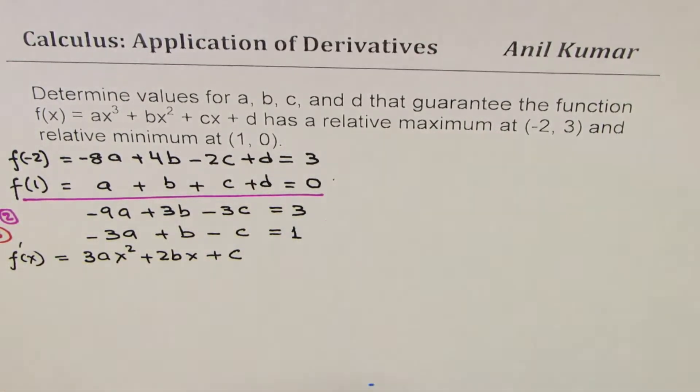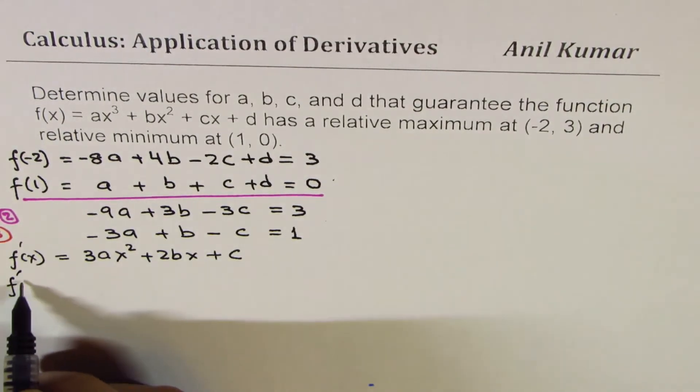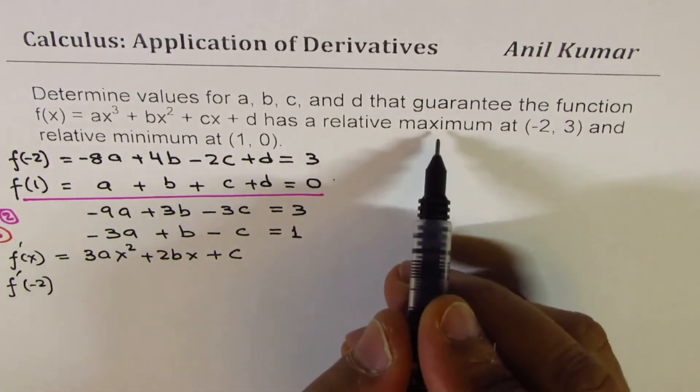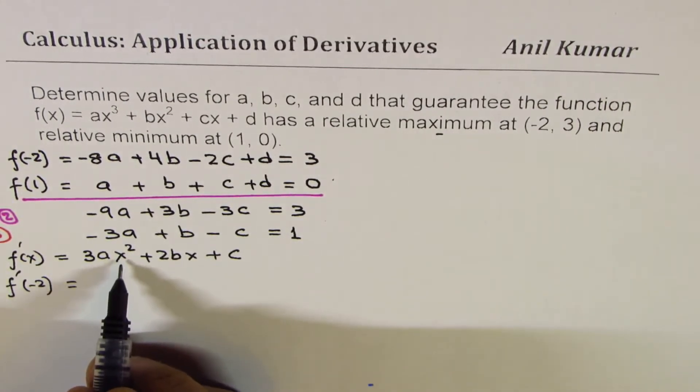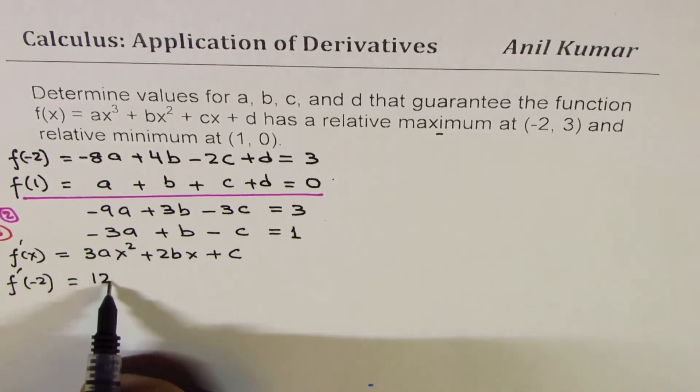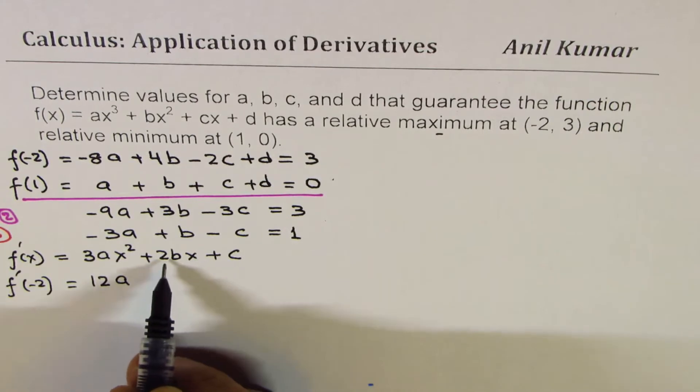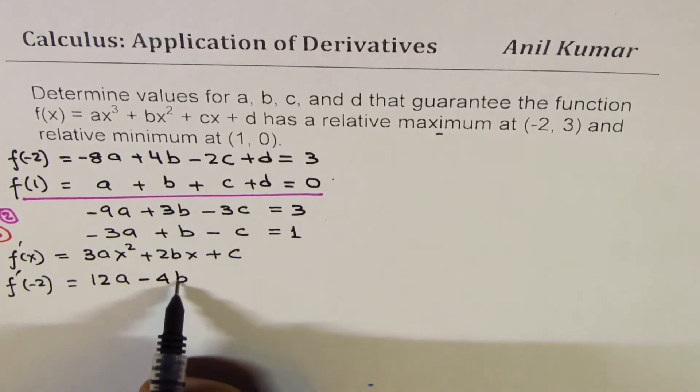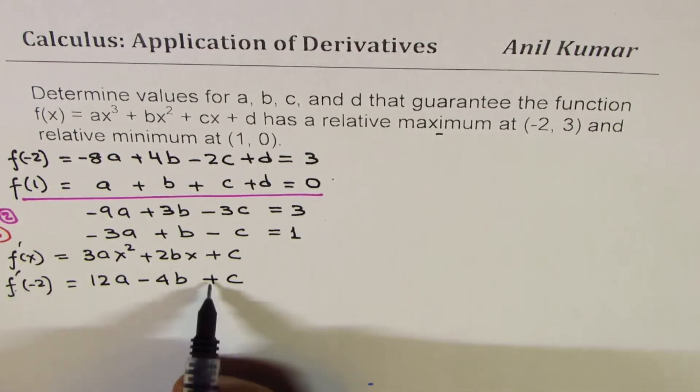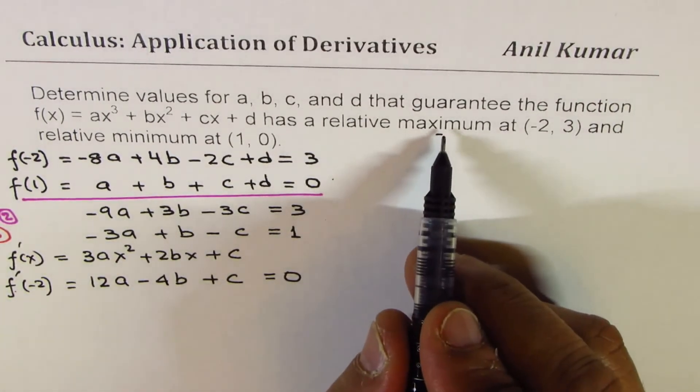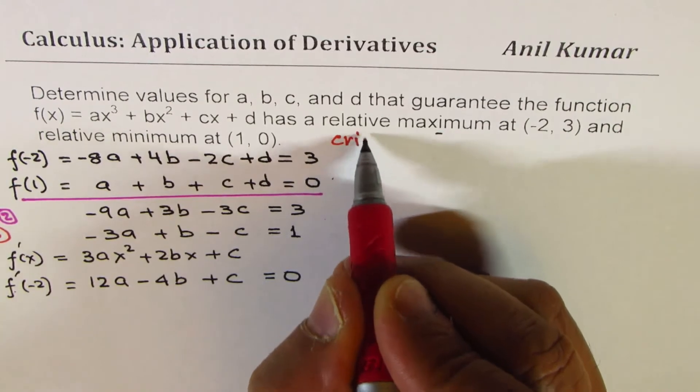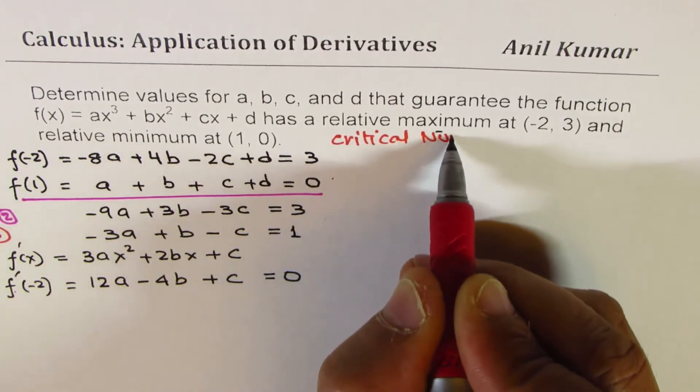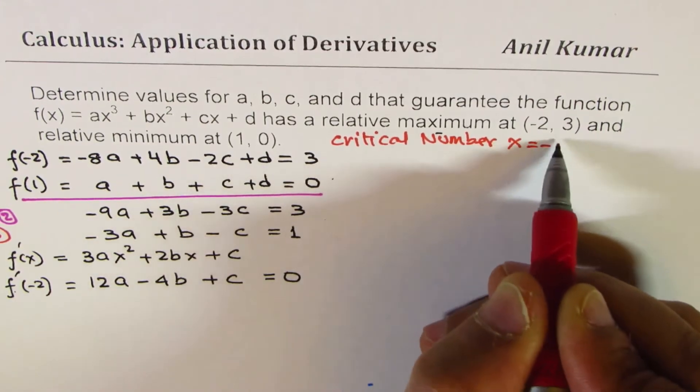Substituting that critical number, one of these points, let's say -2, 3 first. So we know at -2 we have maximum. That means this should be 0. So if I substitute -2, we get 12a - 4b + c = 0. This is a critical number.